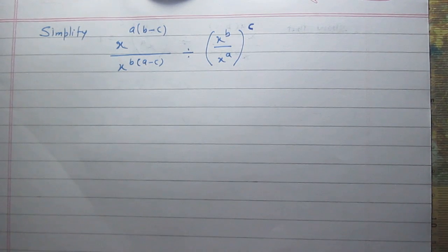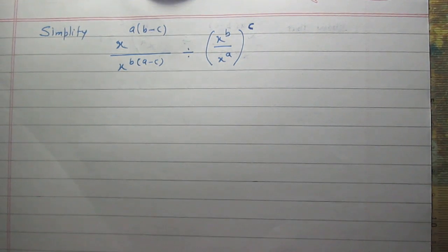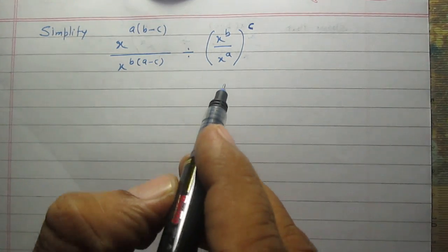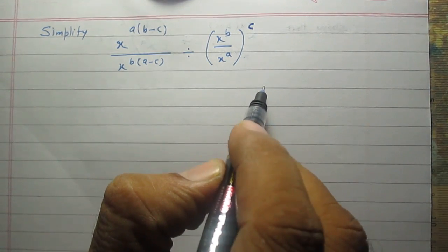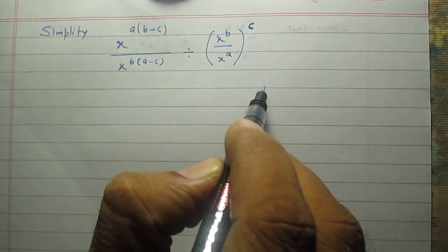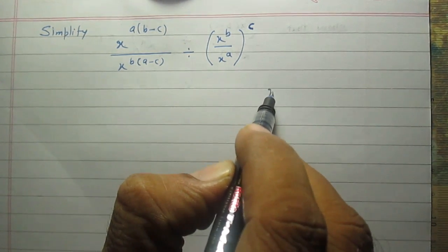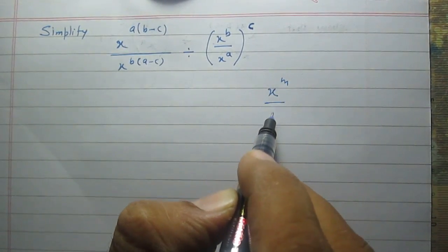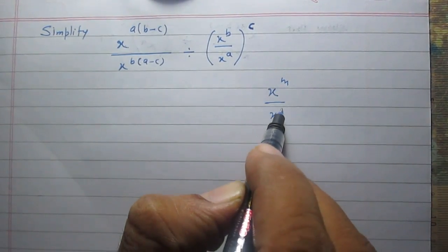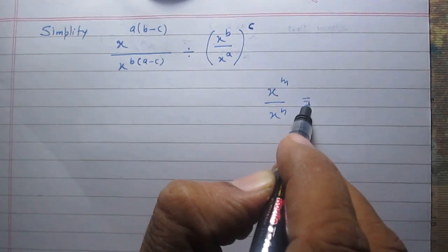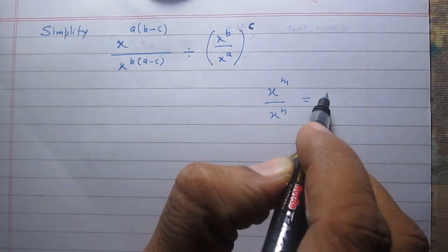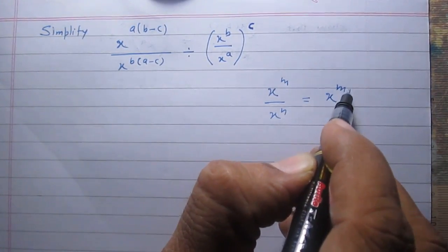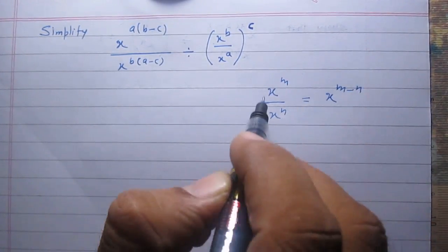In this question, we are to simplify the given term. Let us consider, according to the laws of exponents, x raised to the power m divided by x raised to the power n is equal to x raised to the power m minus n.